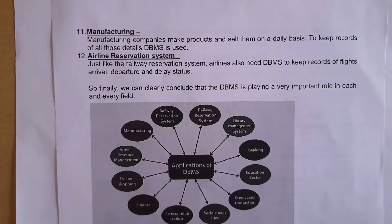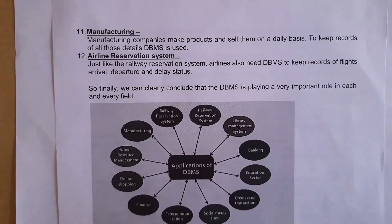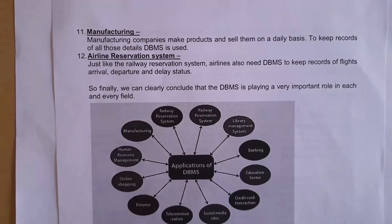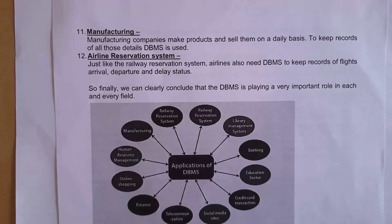Even in manufacturing companies, we use database management system software to manage databases. A manufacturing company's database contains various information regarding the products they manufacture. For example, if a company manufactures soap, the database contains all details regarding that product — like how many soaps they manufacture daily, the chemicals used, and how many supplies are going out daily.